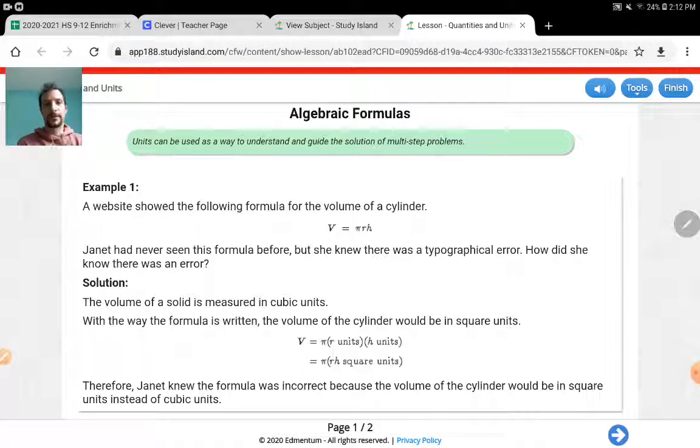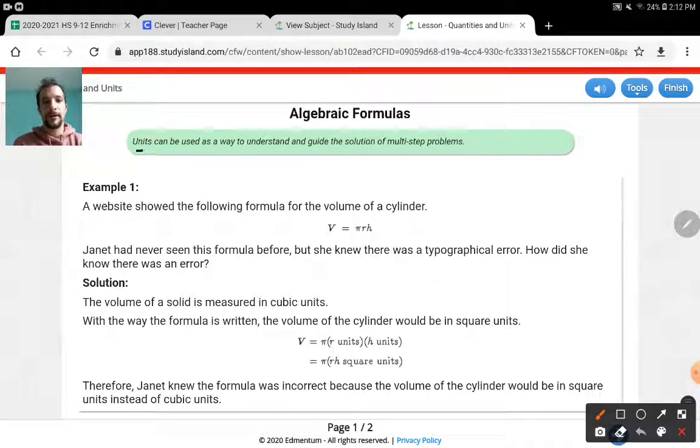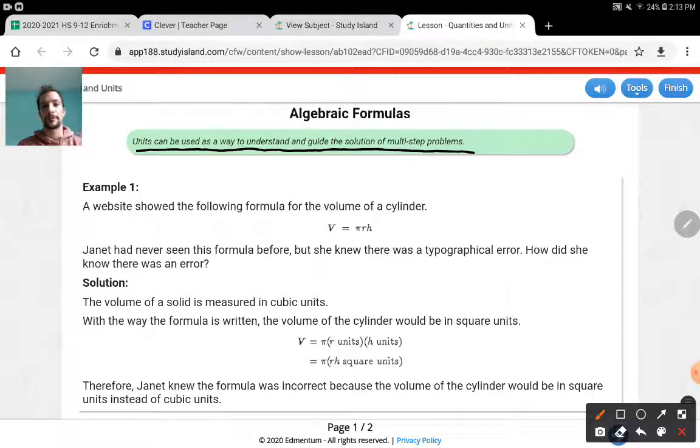In the second half of the week, you're going to deal with Study Island, which requires more rigor, a little more involvement and thinking. Here's the first example. What they start the lesson with is units can be used as a way to understand and guide the solution of multi-step problems. The first example in the notes is a website showed the following formula for the volume of a cylinder: Volume equals pi times r times h. Looking at this formula, let me give you a little brief background. Pi is just a number. It doesn't have any unit, it's just a number like 5 or 7.